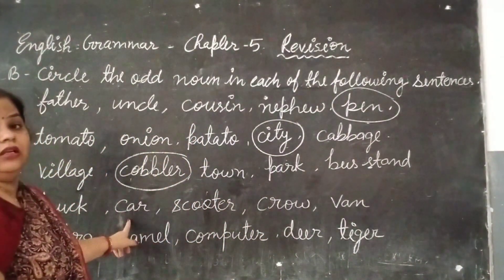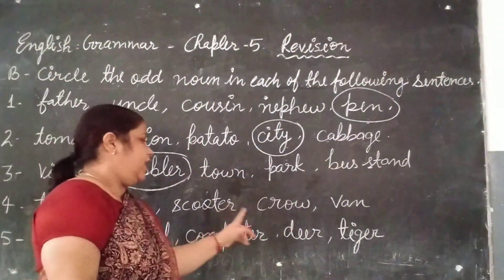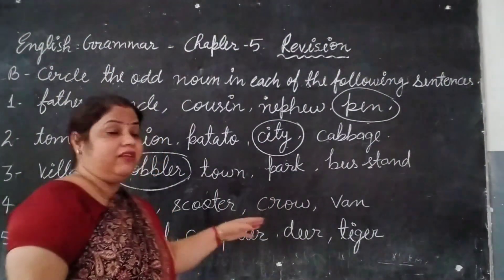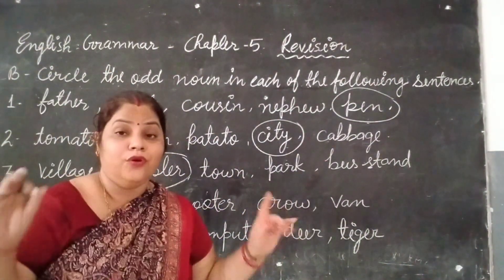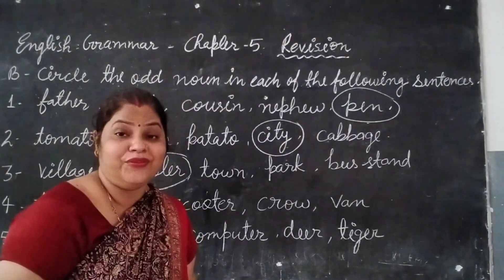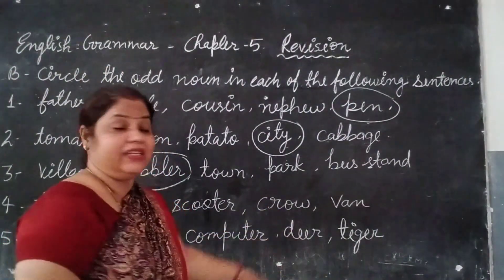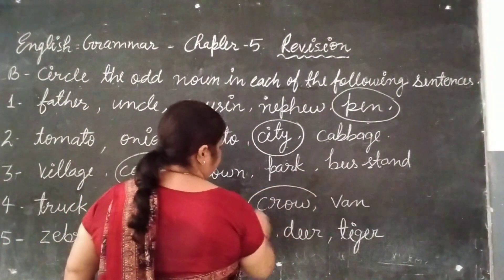Fourth question: truck, car, scooter, crow. Truck, car, and scooter are all vehicles. But crow is a bird that flies. So crow is the odd one out here. Circle crow.